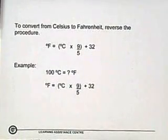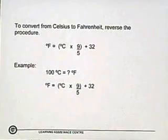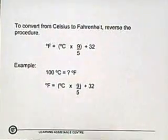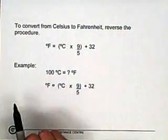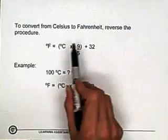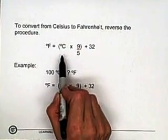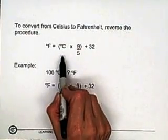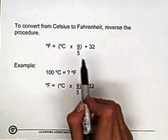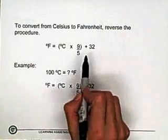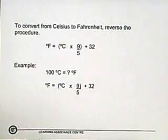Moving on, you can also convert from Celsius to Fahrenheit — you reverse the procedure. If you know Celsius, you can calculate Fahrenheit using this formula: degrees Fahrenheit is equal to degrees Celsius times 9 fifths. Notice the inversion — once you calculate that, you add 32.